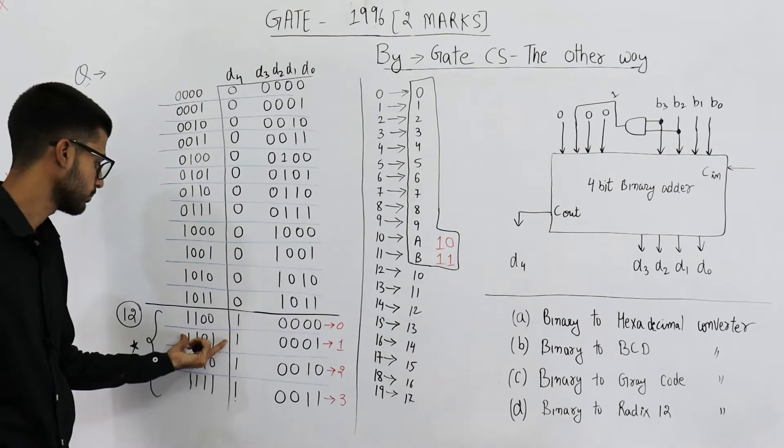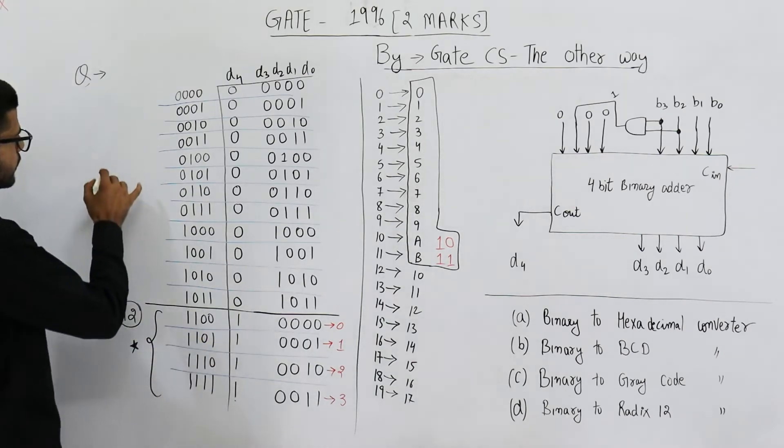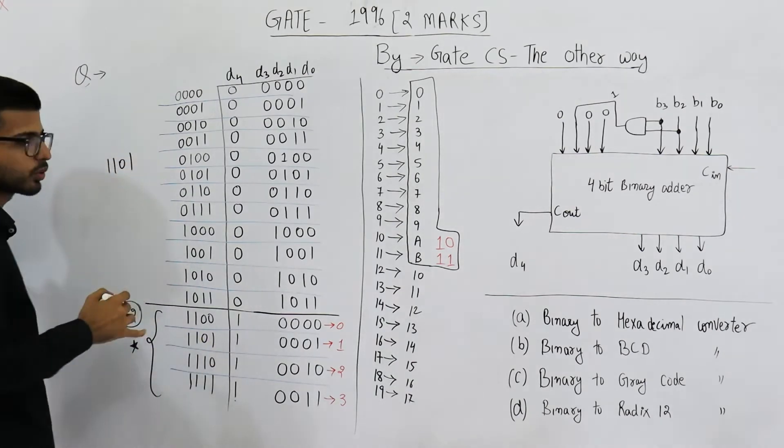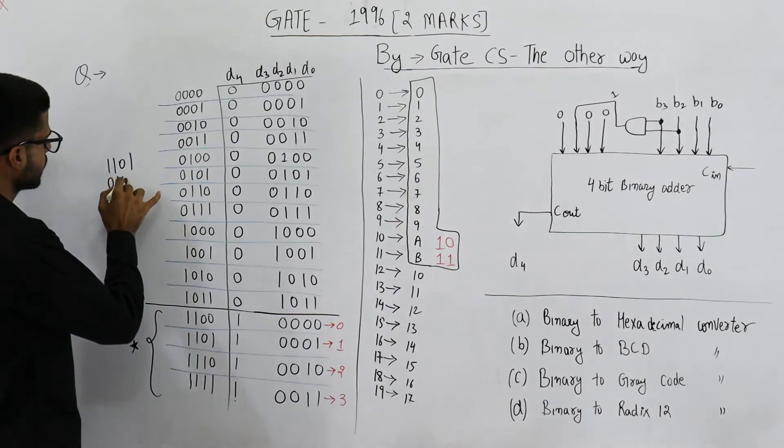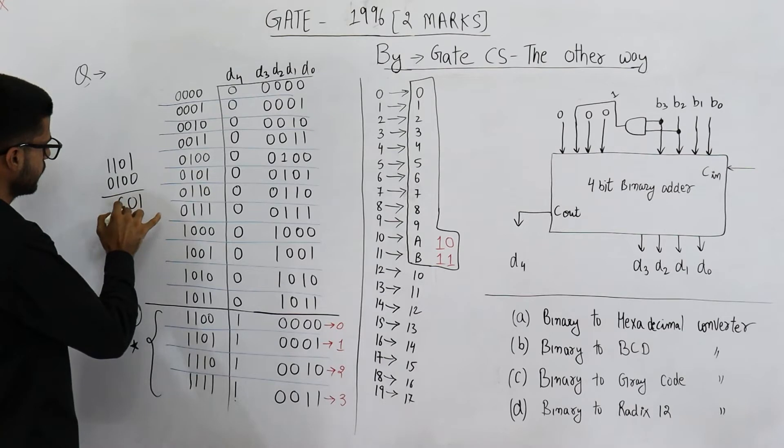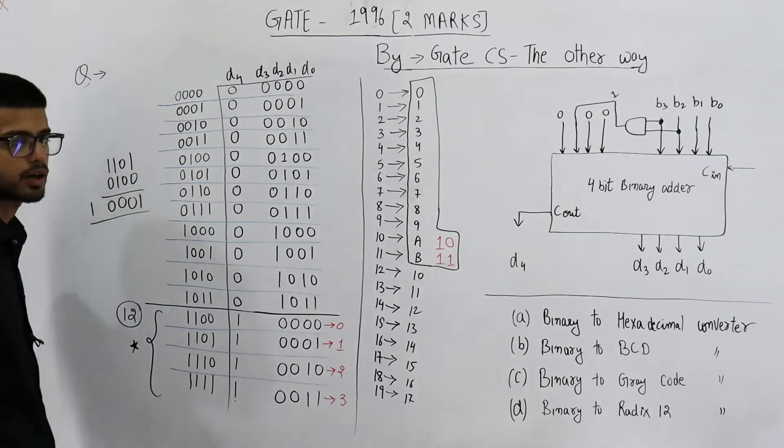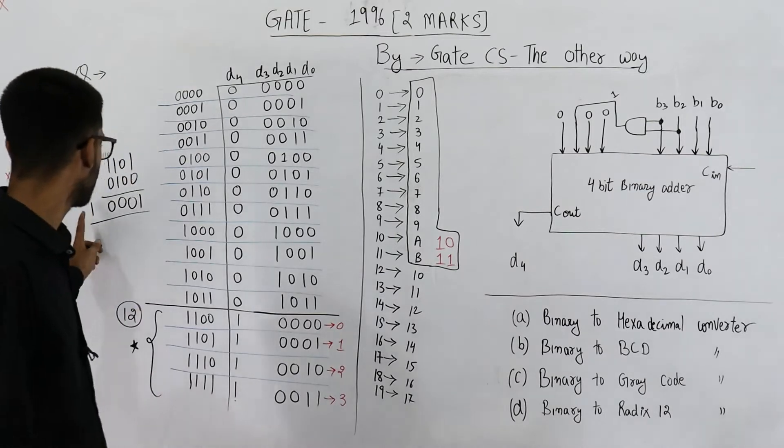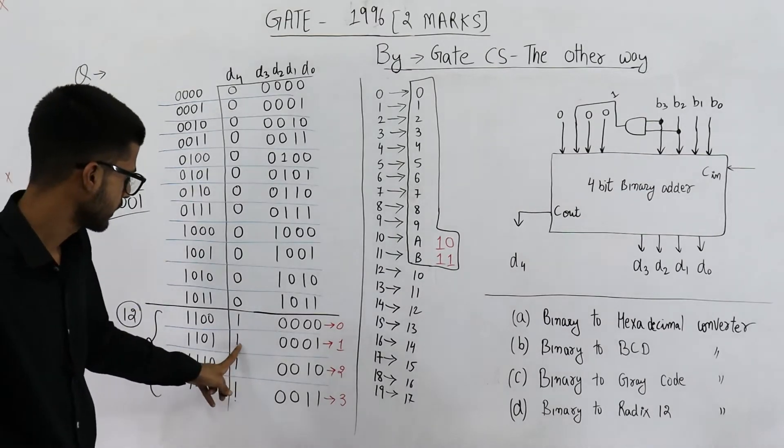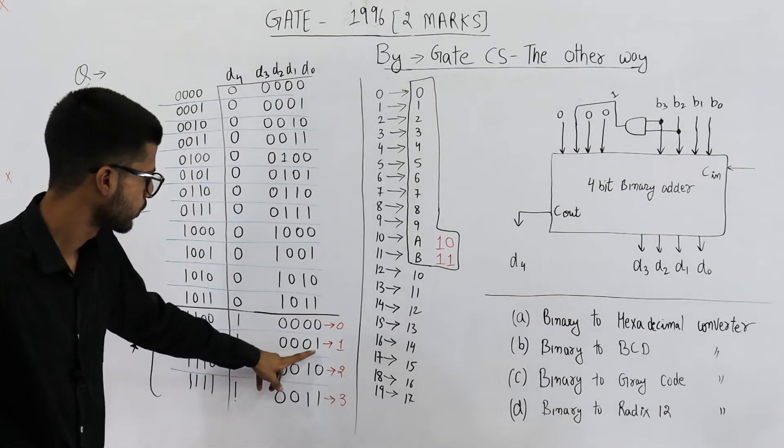Let us see this one for example. 1101. To this, we are adding 4 which is 0100. So 1 plus 0 is 1. 0 plus 0 is 0. Then again 0, again 0 and 1. This is going to be the output. 10001.